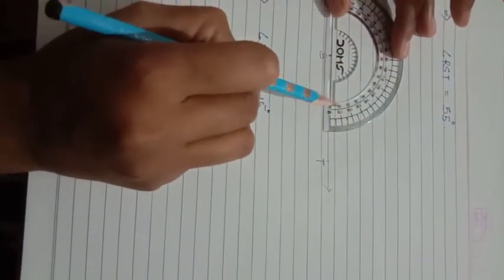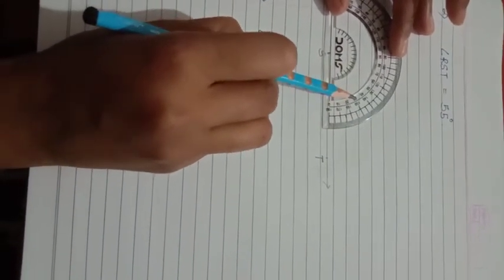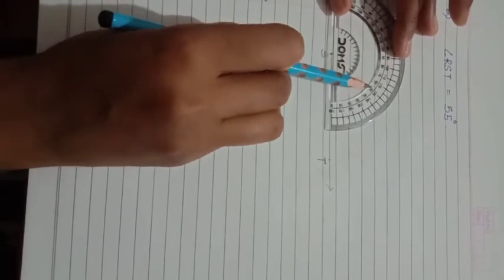So this is 0 degrees, this is 10, this is 20, this is 30, this is 40, this is 50 and this is 60.